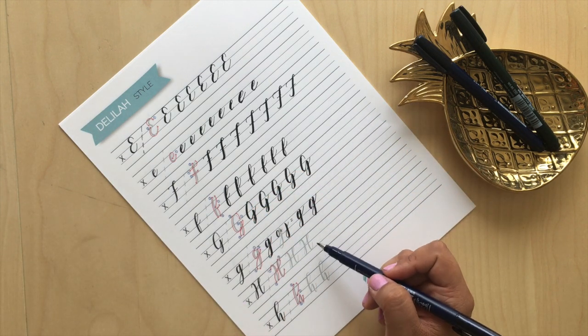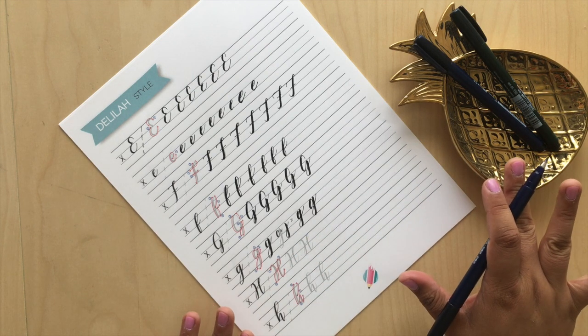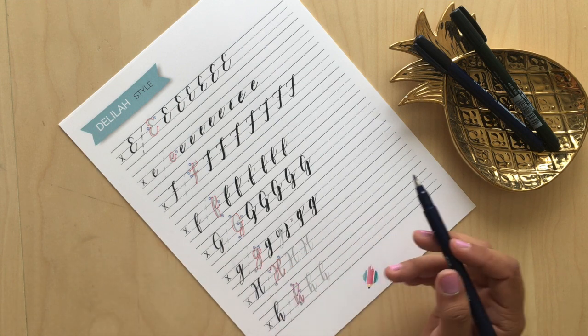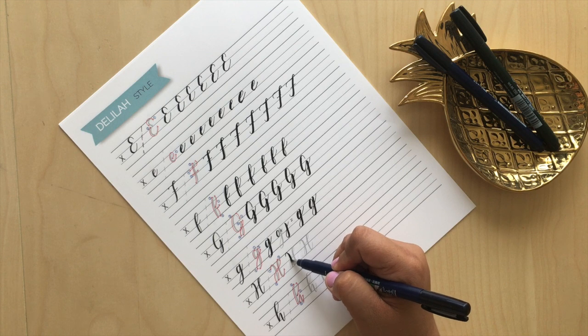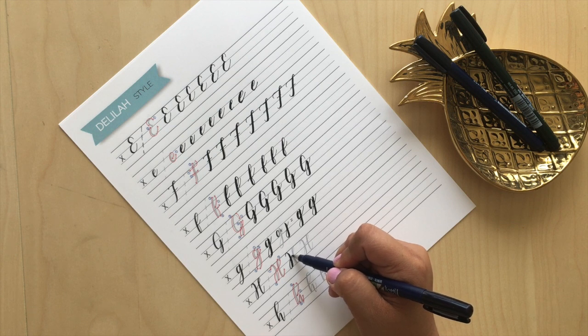The next letter we have is the capital H, which is a lot of fun because essentially this is just one fluid stroke transitioning quite a bit from thick to thin. You're going to start with a thin stroke into a thick stroke, and then when you go up it's a thin stroke, and you're crossing over to create the second half of the H.